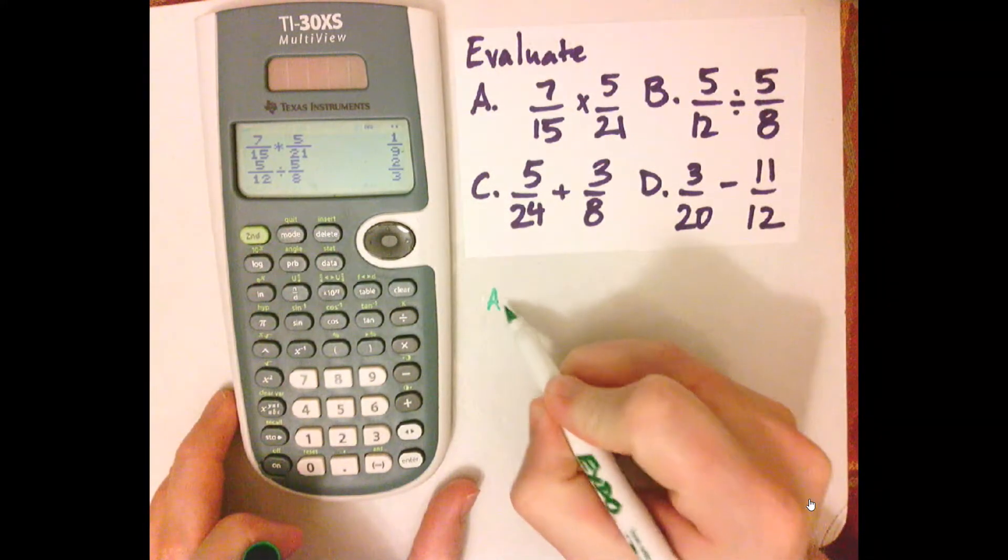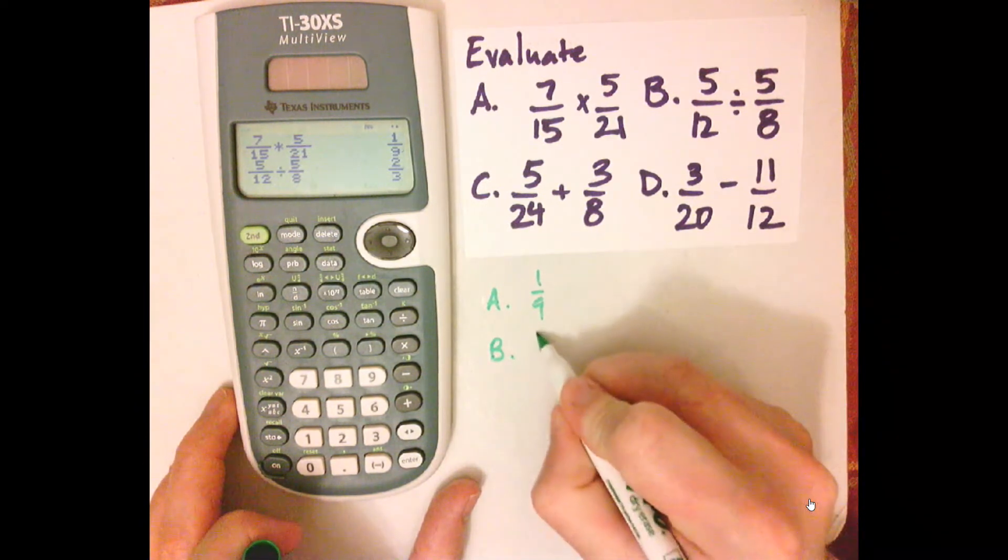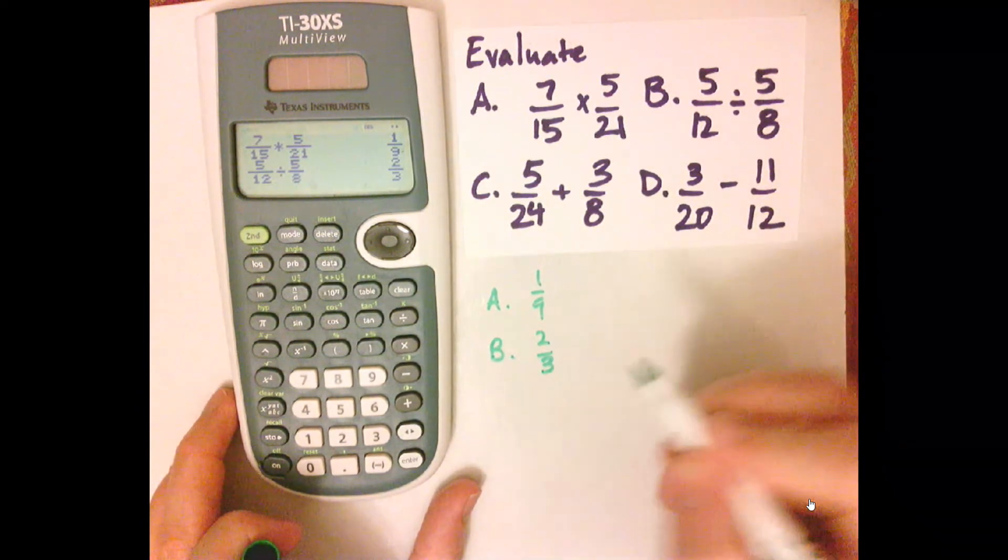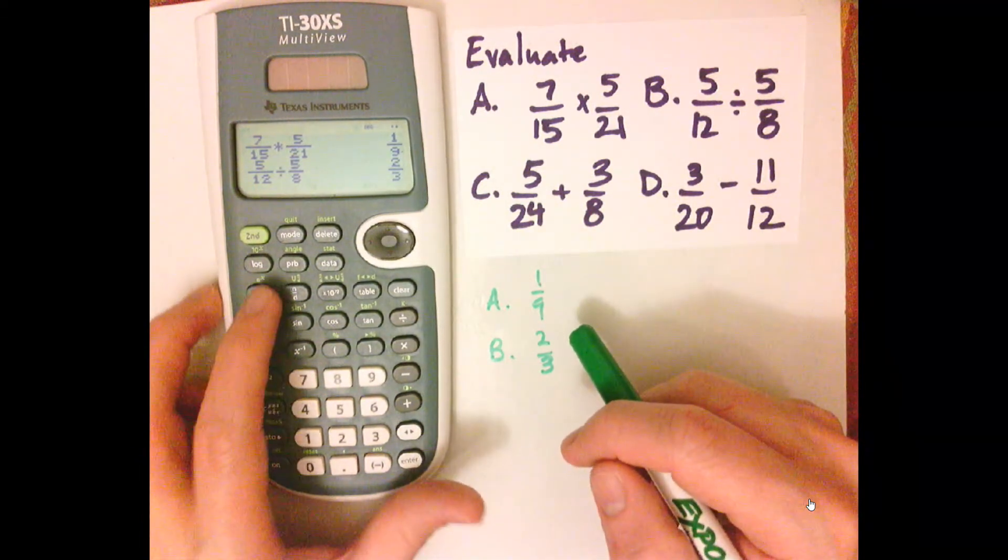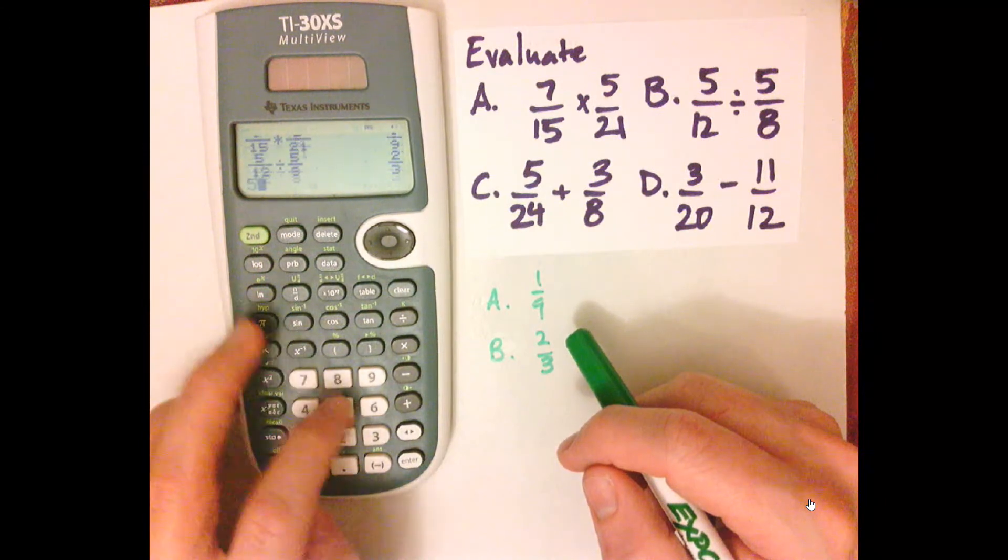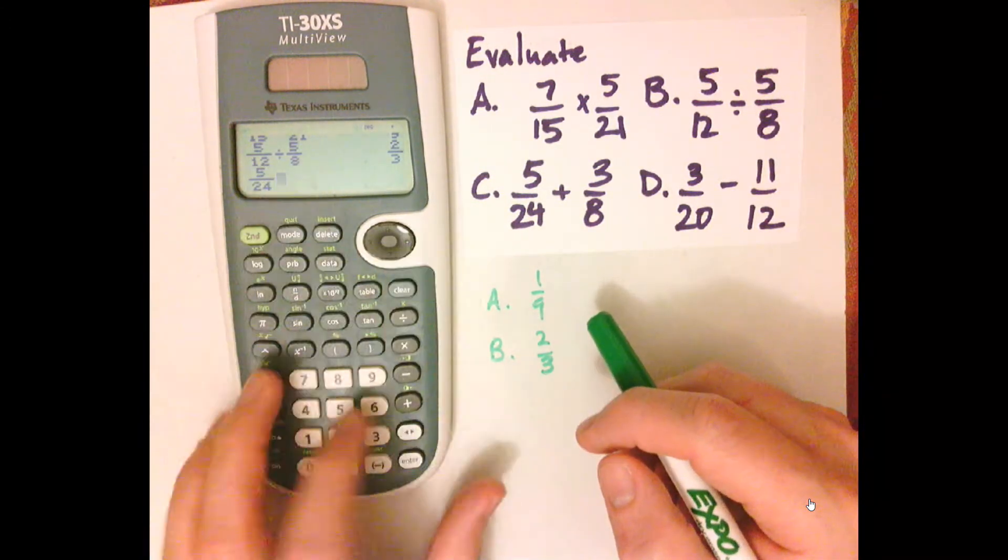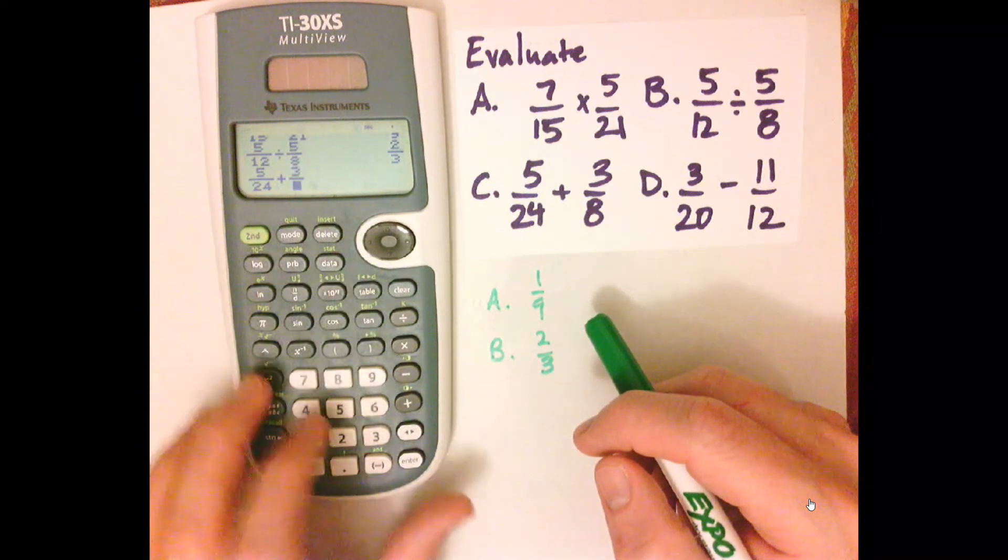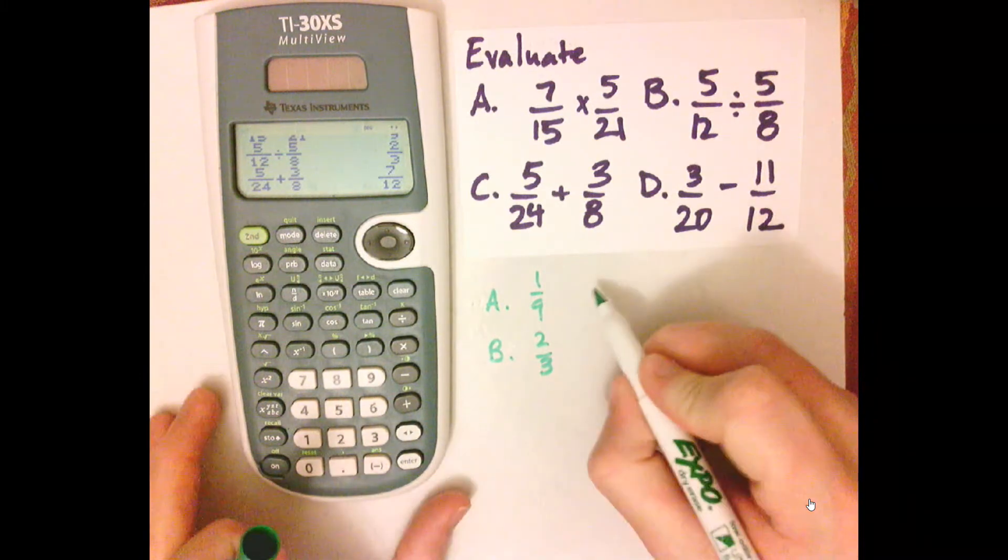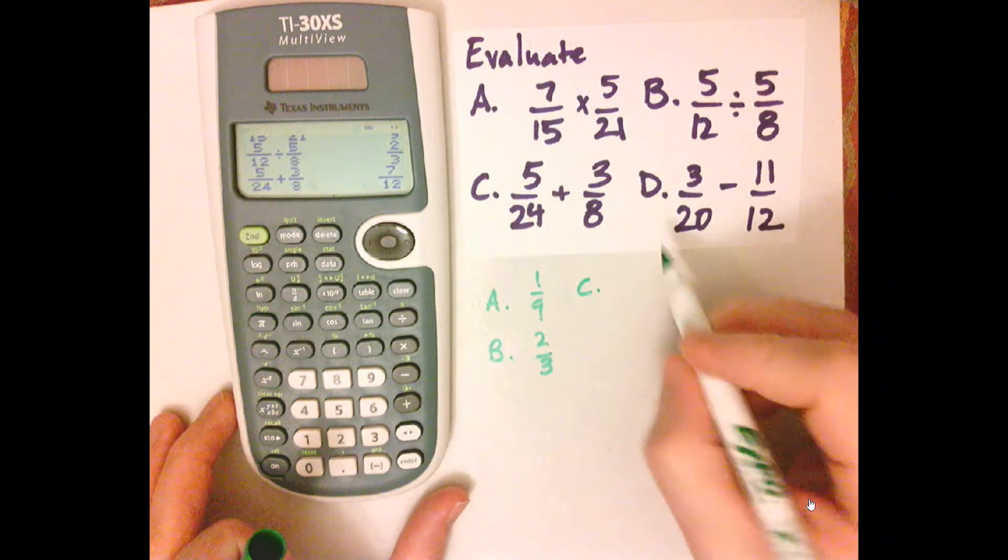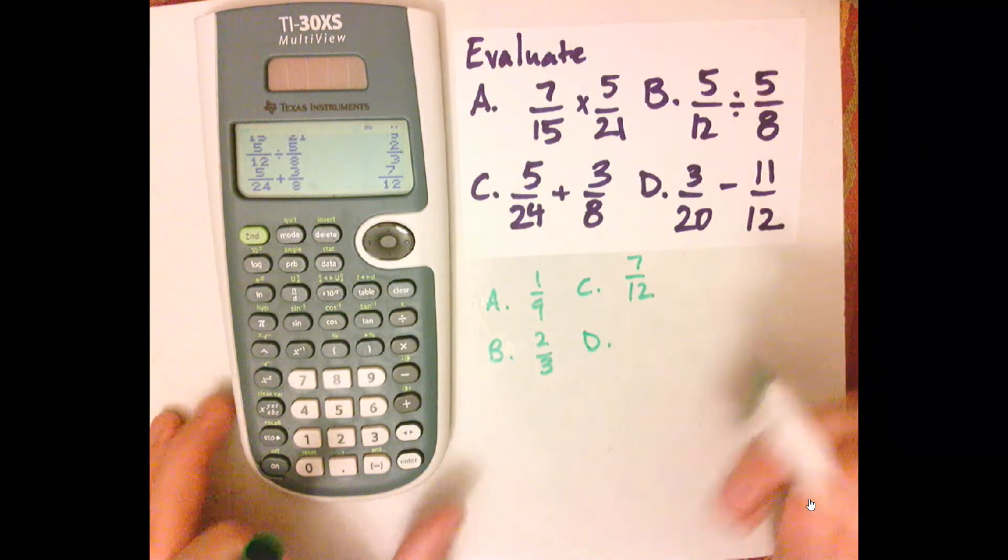So 5, 24, plus 3, 8, Enter. So C is 7 twelfths, and D, let's see what D is.